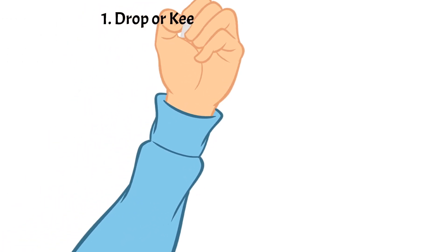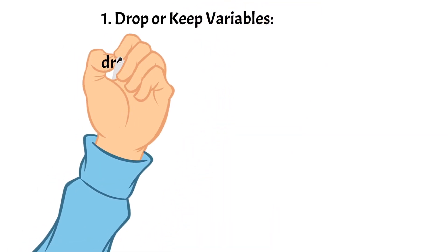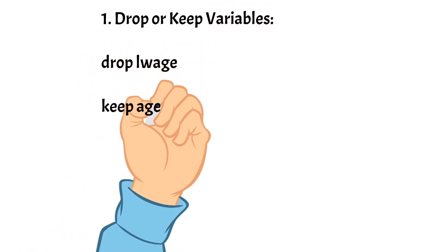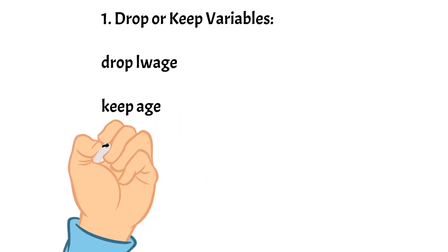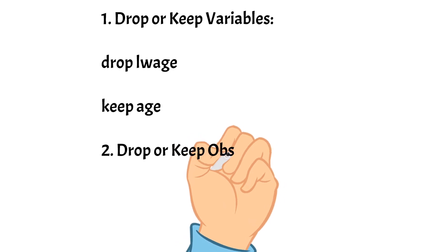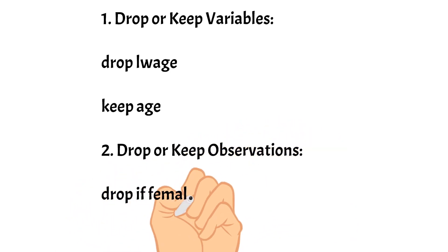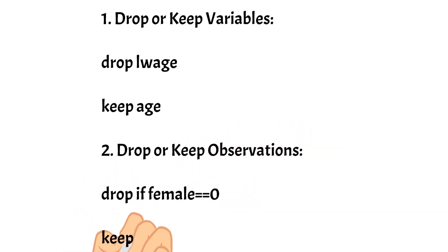Today we have learned to use the drop or keep command followed by the variable's name to eliminate a variable. We also discussed how to drop or keep observations using the drop or keep command with the if condition.